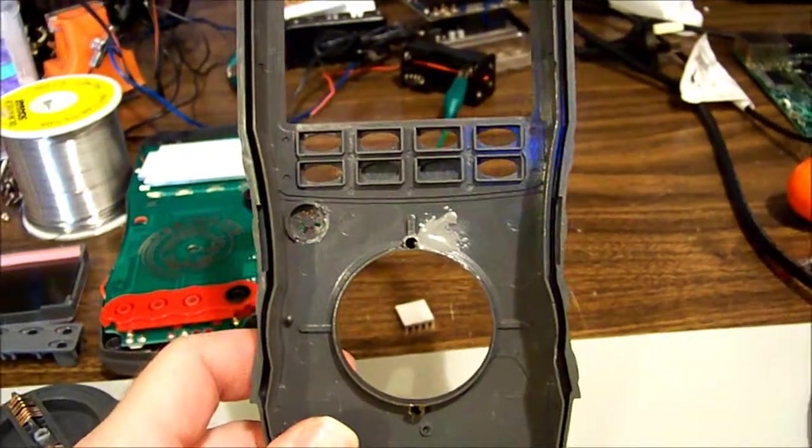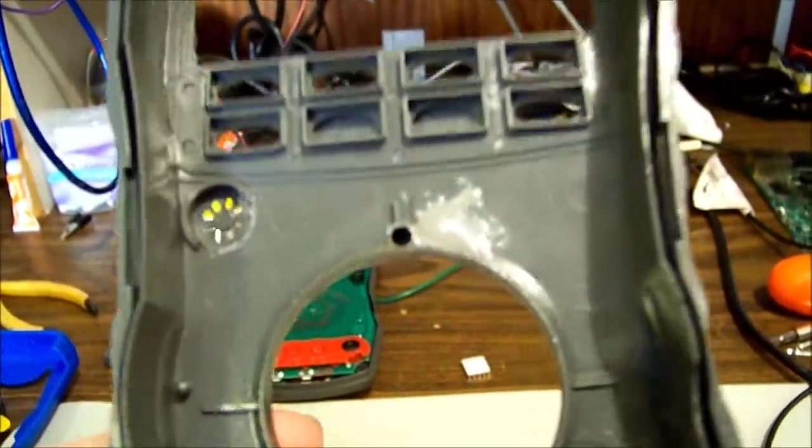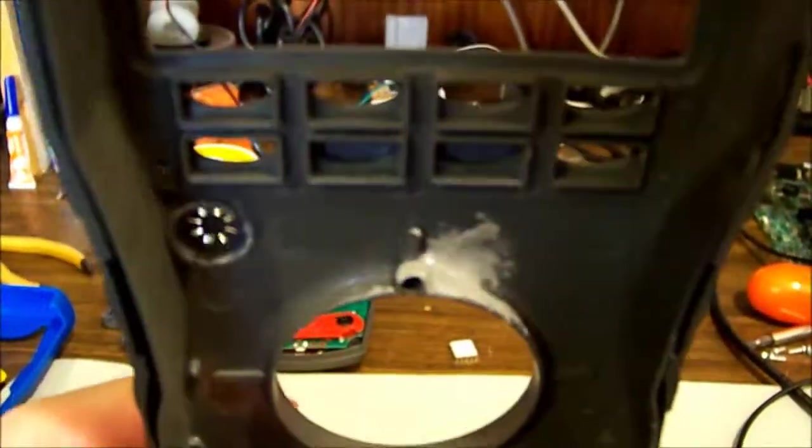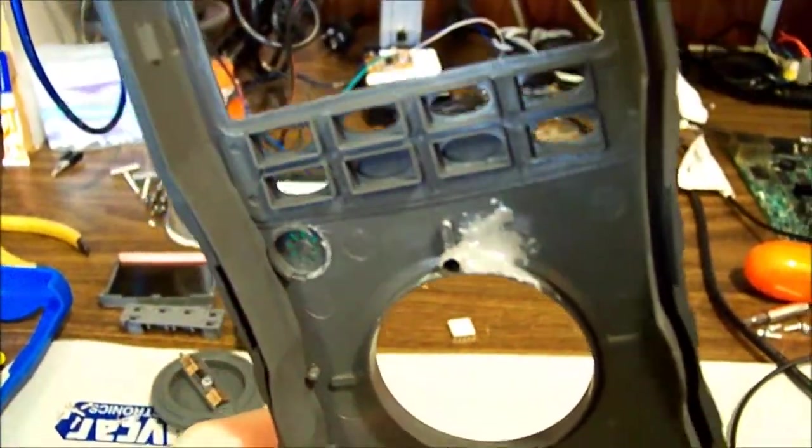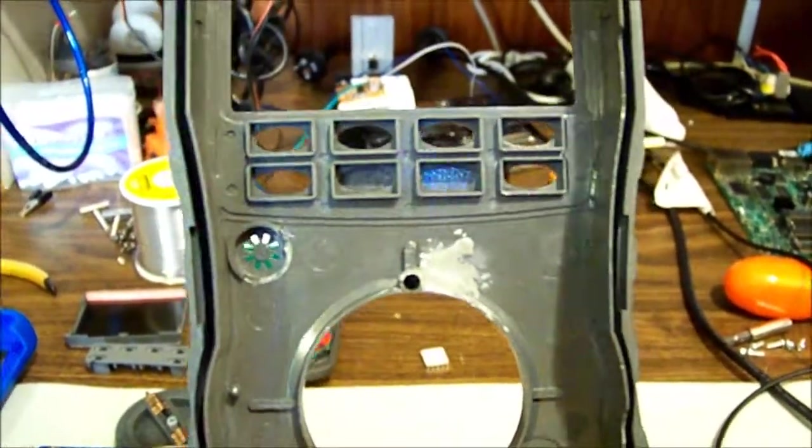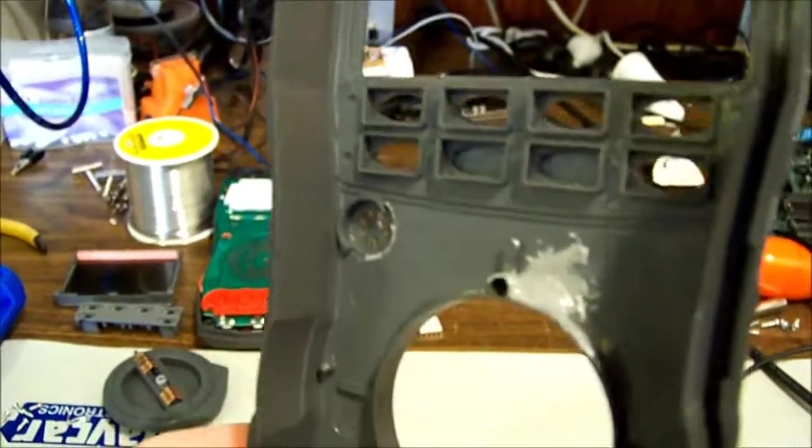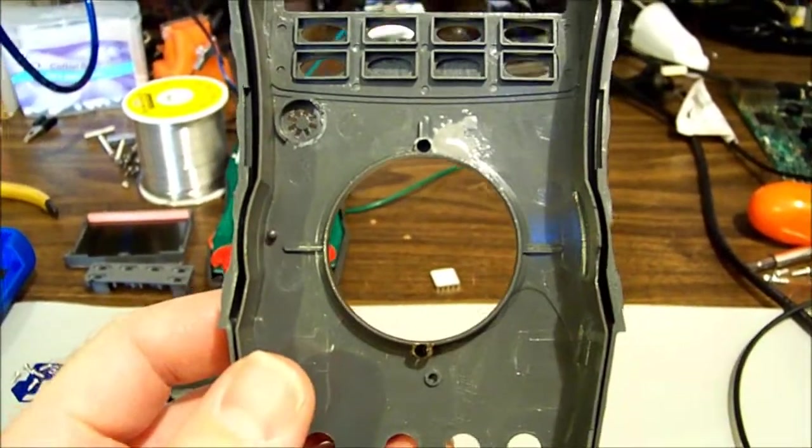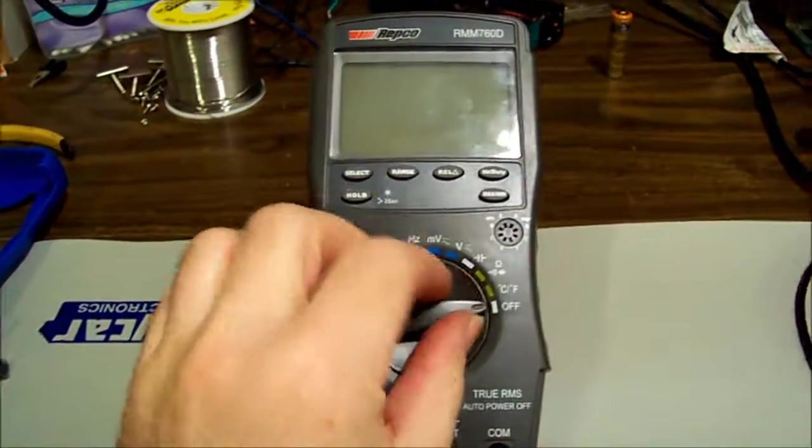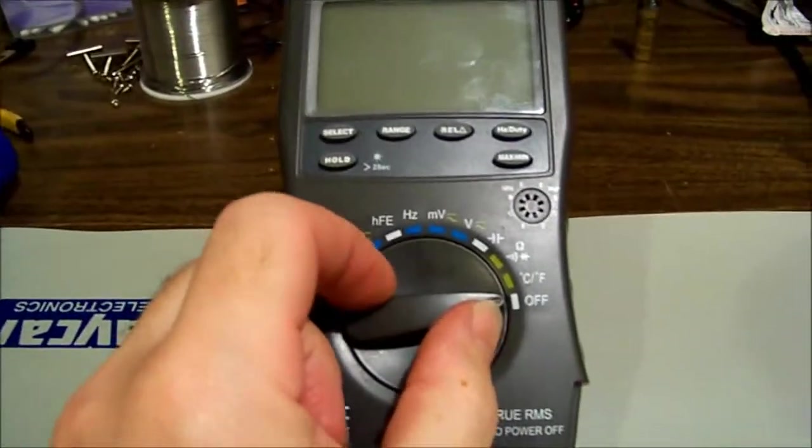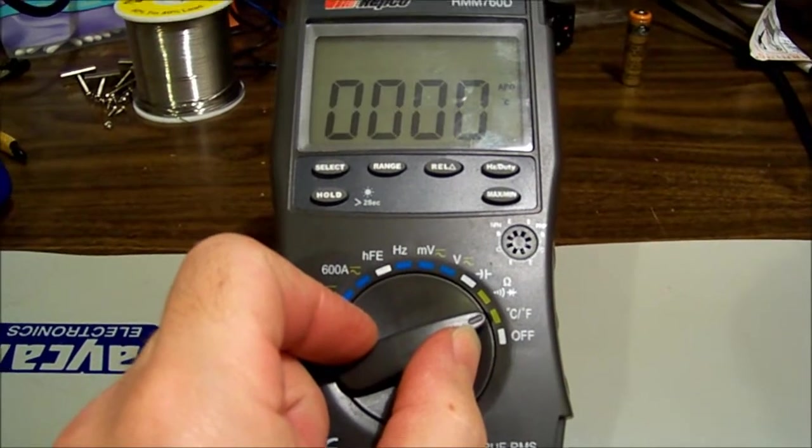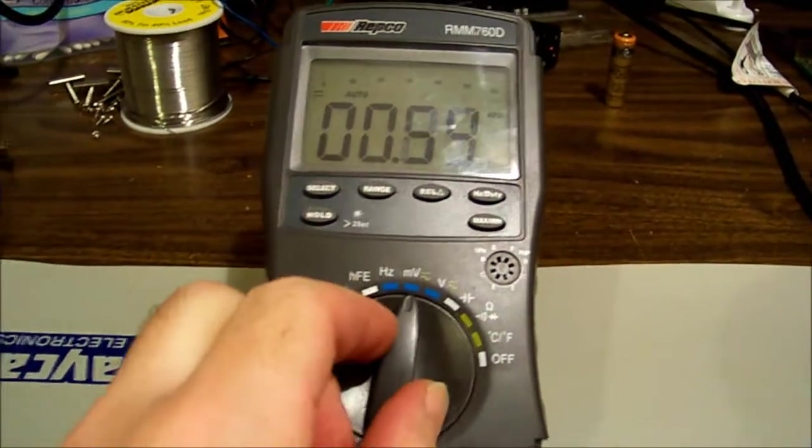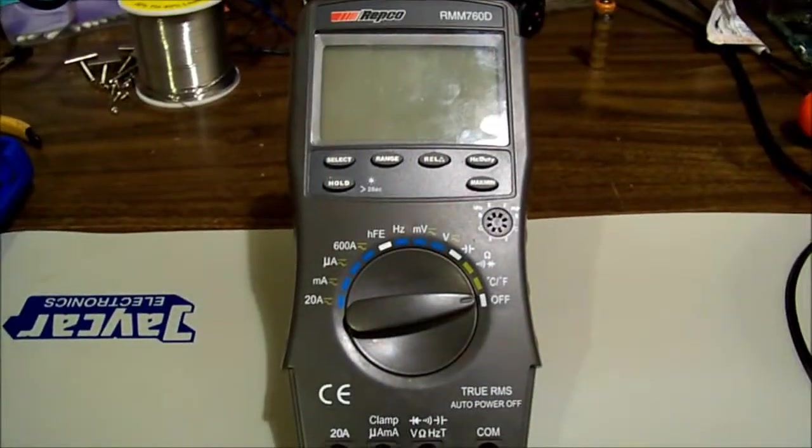And 24 hours later we have cured JB Weld. A light grey blob there now encompassing the half of the spring housing. Let's throw it all back together and give it a test run. Okay, and a one and a two and a click. Oh, isn't that beautiful? Nothing like a clicky switch.